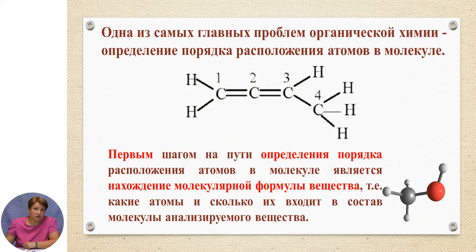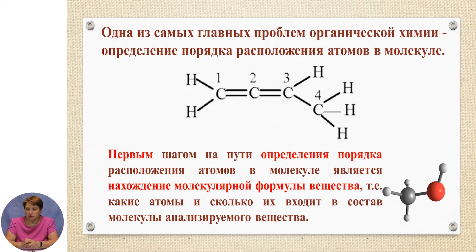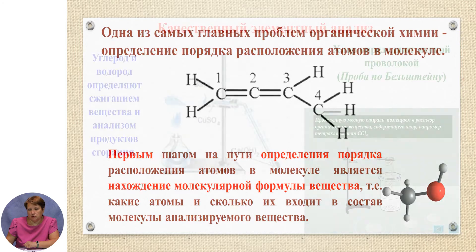One of the main problems in organic chemistry is determining the order of arrangement of atoms in molecules. We know that atoms in molecules are bonded not randomly, but in a strictly defined order determined by their valency. The first step toward determining this order is finding the molecular formula of the substance — that is, answering: which atoms and how many of them are part of a given substance?